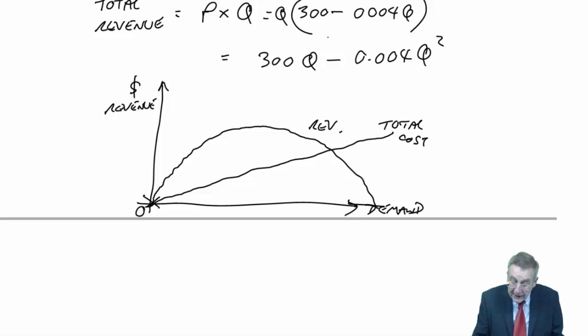And the profit in each case is the difference between the excess of the revenue over the cost. And what we did last time, we worked out the profit at each level, and we said, if we drop the selling price, so we sold more,